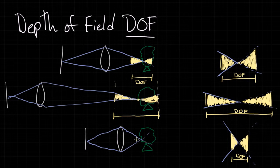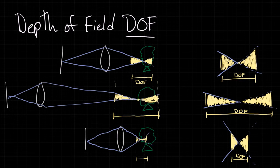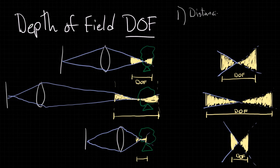We get a nice shallow depth of field. So again, if you want a wide depth of field, move away from your subject. If you want a shallow depth of field, move much closer to your subject. We're going to list this first method as: distance to subject.